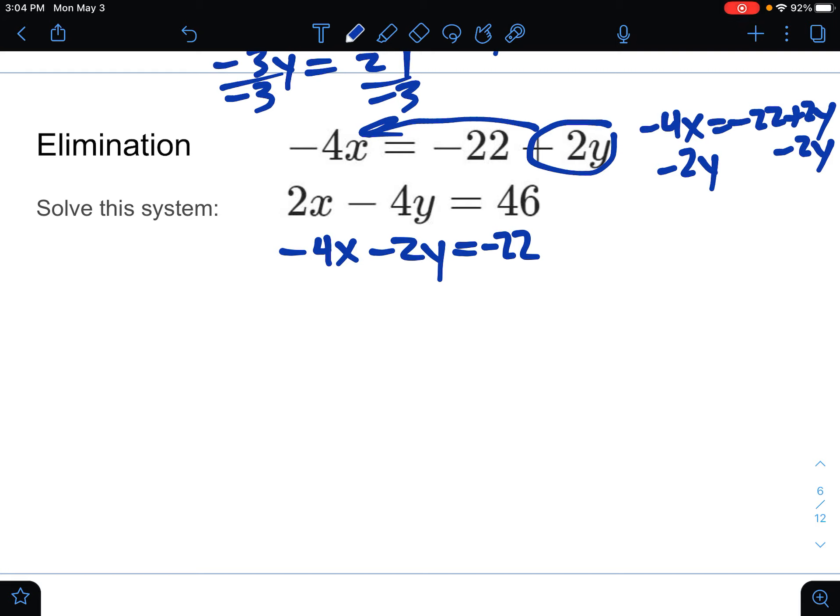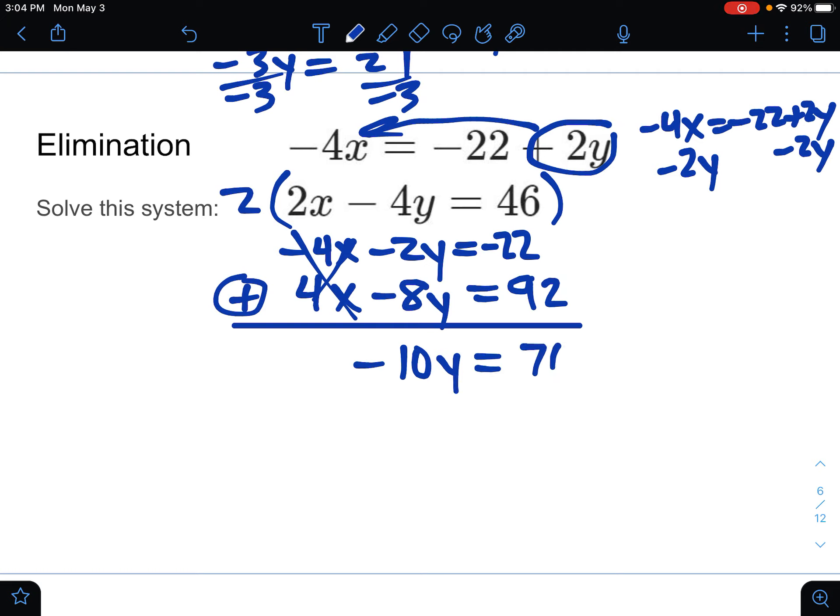So I see a negative 4x on the bottom. I'm going to try to make it into a positive 4x up top by doing times 2. So that would be a positive 4x minus 8y and a 92 on the right. And I'm going to add those two together to make the x's eliminate. You get negative 10y, and that would just be 70 on the right side.